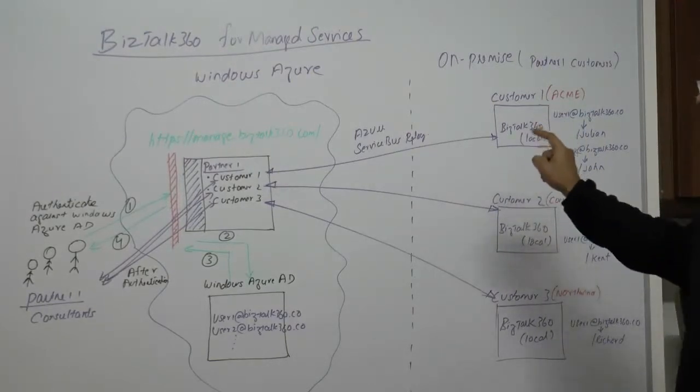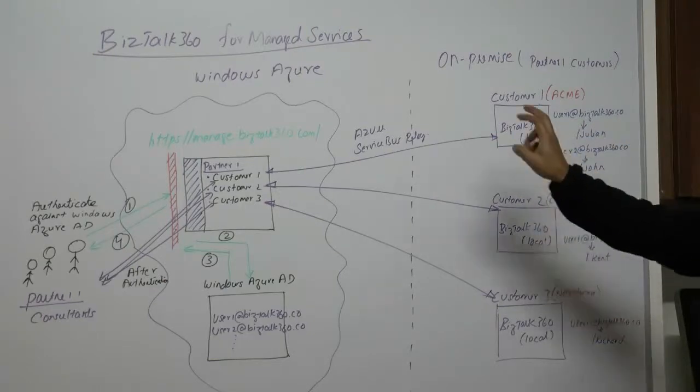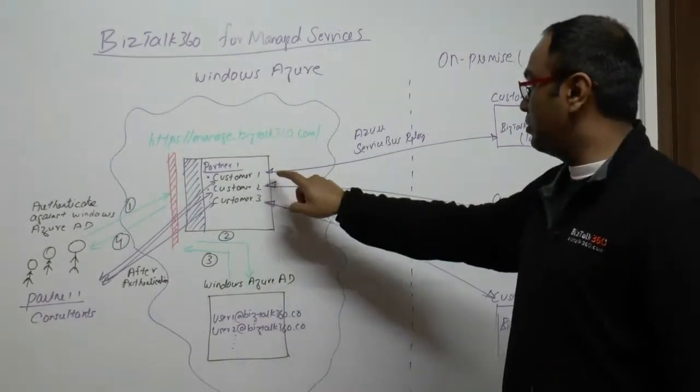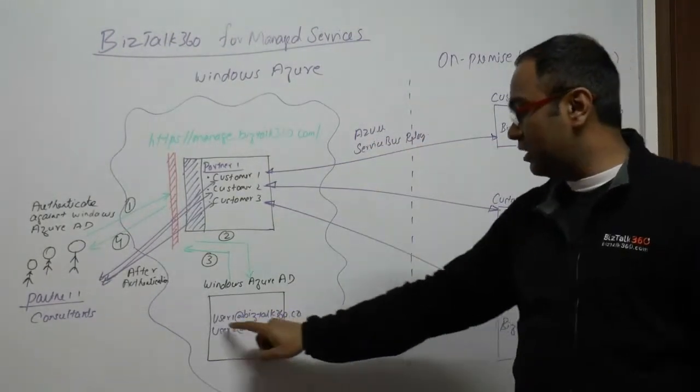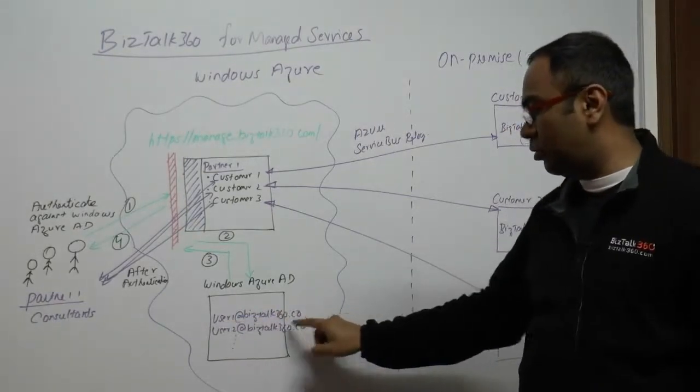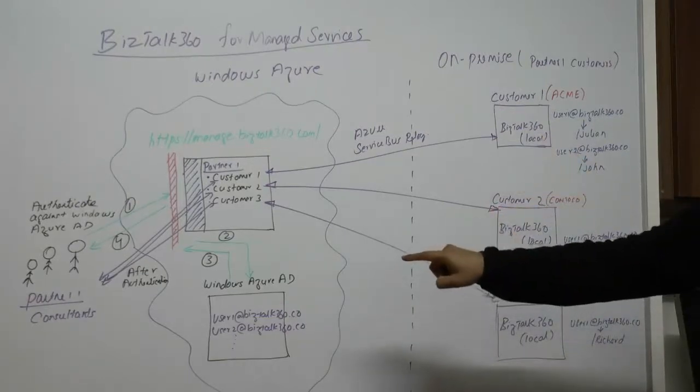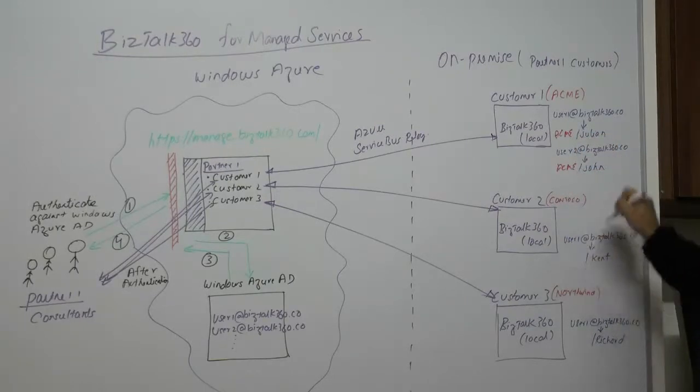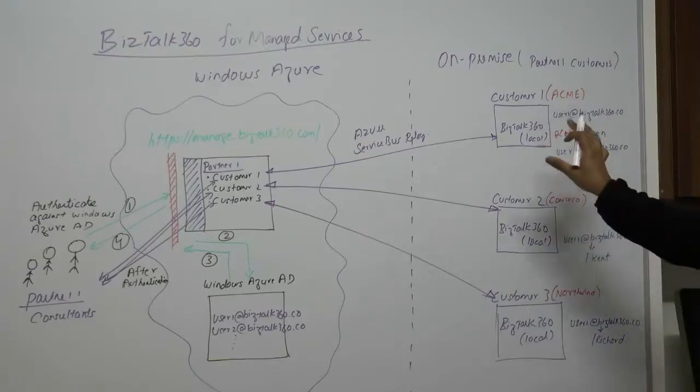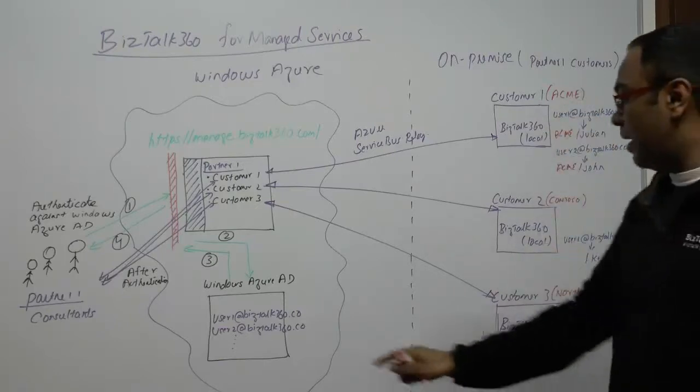We also need to do one more thing: user mapping. The authenticated user coming to the site from the external world will be something configured on our AD, which is going to look something like user1@bistalk360.com or user2@bistalk360.com. But here what you need to do is map that user to a local user, something like ACME\Julian or ACME\John. Julian and John are standard Windows AD users staying on the on-premise environment. You simply map okay when this user is going to hit this environment, he will be mapped to one of these local users.